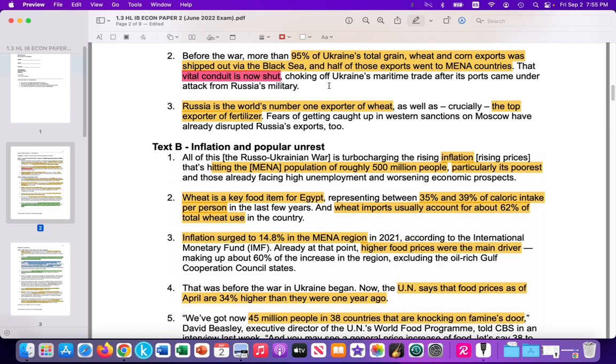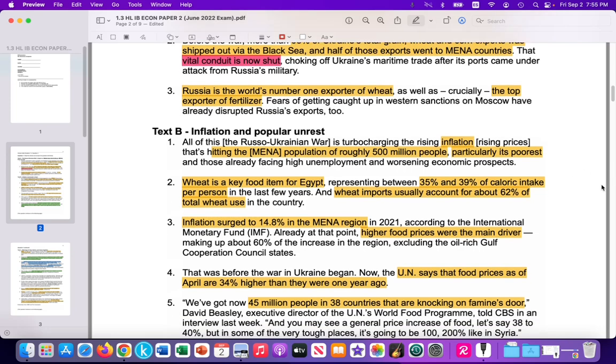But due to the war, that conduit was shut down, but just recently opened, thanks to negotiations between Russia and Ukraine, mediated by Turkey. Russia is the world's number one exporter of wheat and the top exporter of fertilizer.